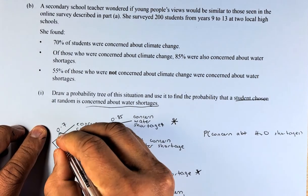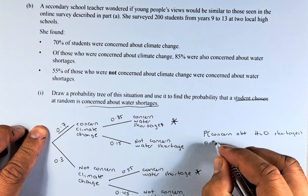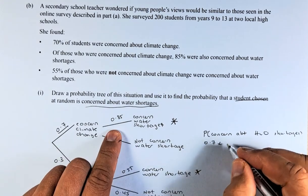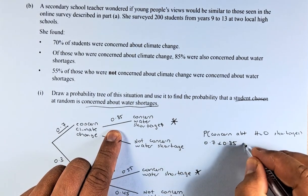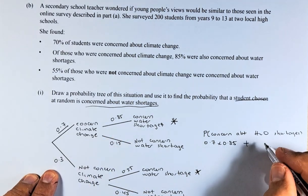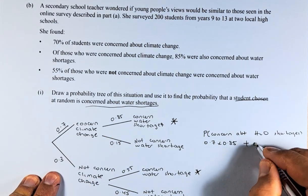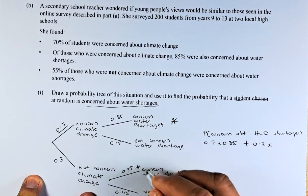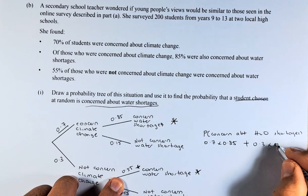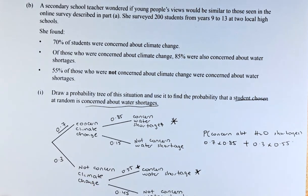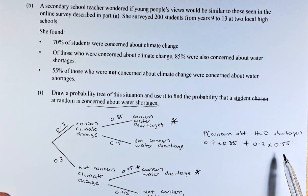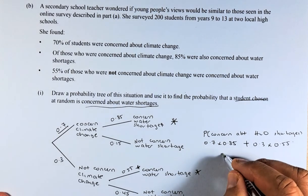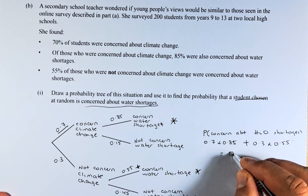So you need to take this number here: 0.7 multiplied by 0.85 for the first possibility, or the second possibility — they are not concerned about climate change — so 0.3 multiplied by 0.55. Put in your calculator: 0.7 times 0.85, then add 0.3 times 0.55, and the total probability is going to be 0.76.